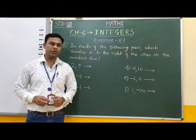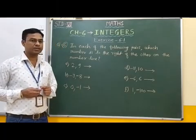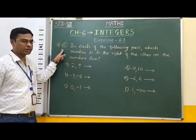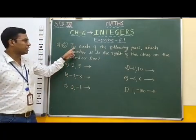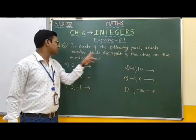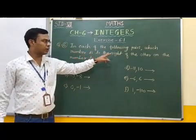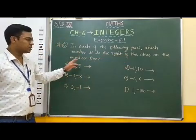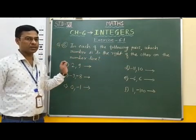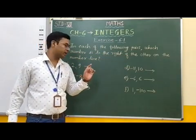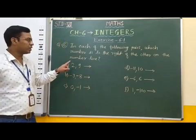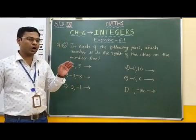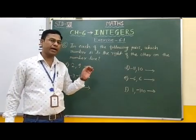Good morning students. In this video, we are going to solve question number 6 and 7 of SSI 6.1. First of all, we are going to solve question number 6. Now the question is: in each of the following pairs, which number is to the right of the other on the number line? Here some pairs of numbers are given and we have to find out which number is to the right of the other. There is no need to draw a number line.